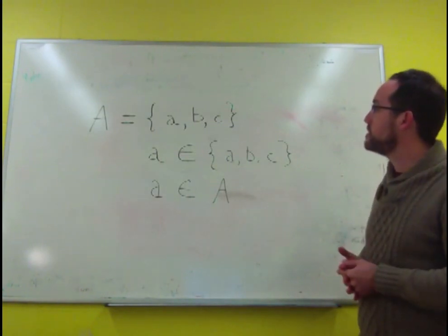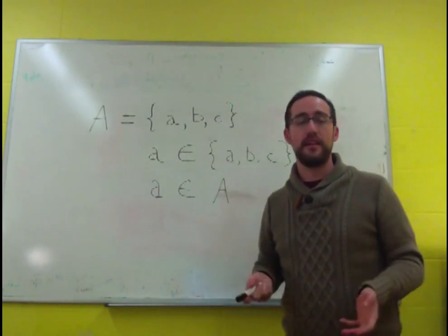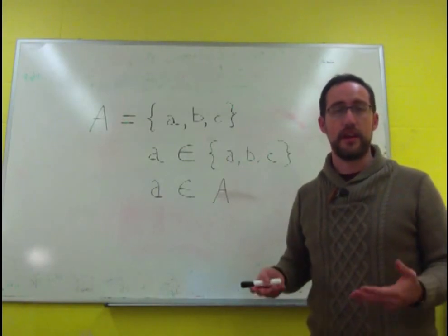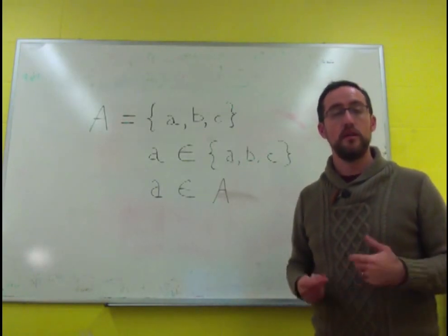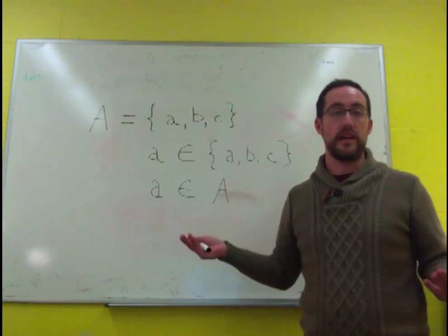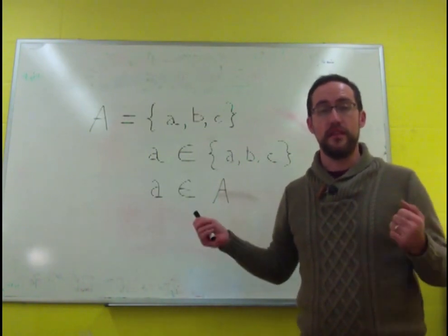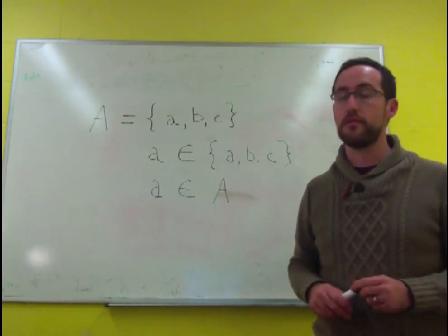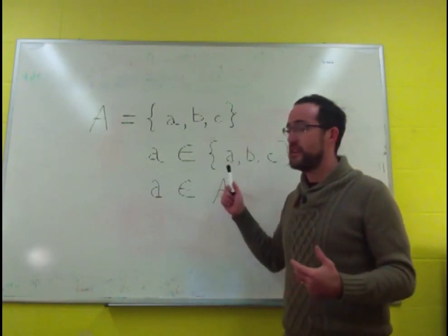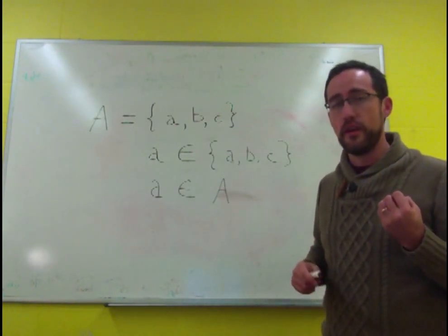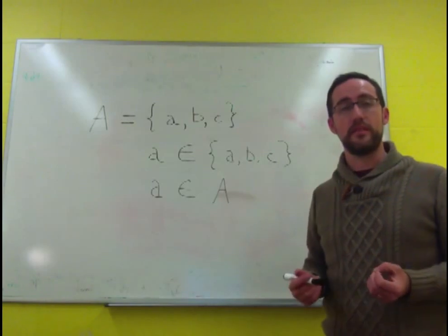So a set has members. A set can have any number of members. It can have an infinite number of members. So for instance, the set of natural numbers is infinite, because there's an infinite number of numbers. But a set can have zero members too. In that case, we call it the empty set.